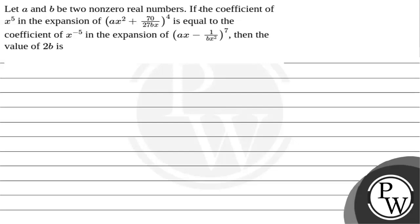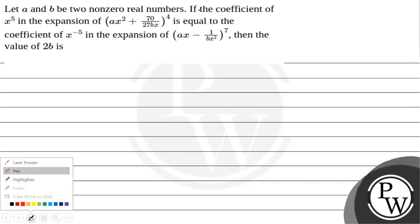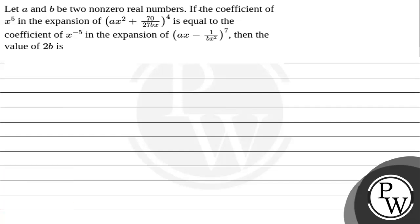Hello, Bacho. Let's read this question. In this question, we have given that a and b are two non-zero real numbers. The question says: the coefficient of x raised to 5 in the expansion of (ax² + 70/27bx) raised to 4 is equal to the coefficient of x raised to −5 in the expansion of (ax − 1/bx²) raised to 7. Then the value of 2b is?